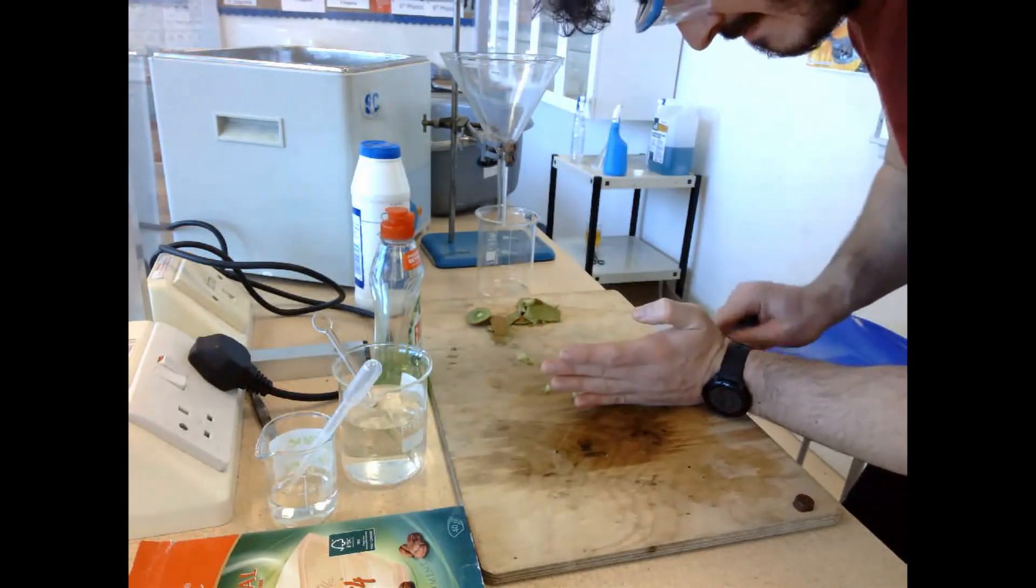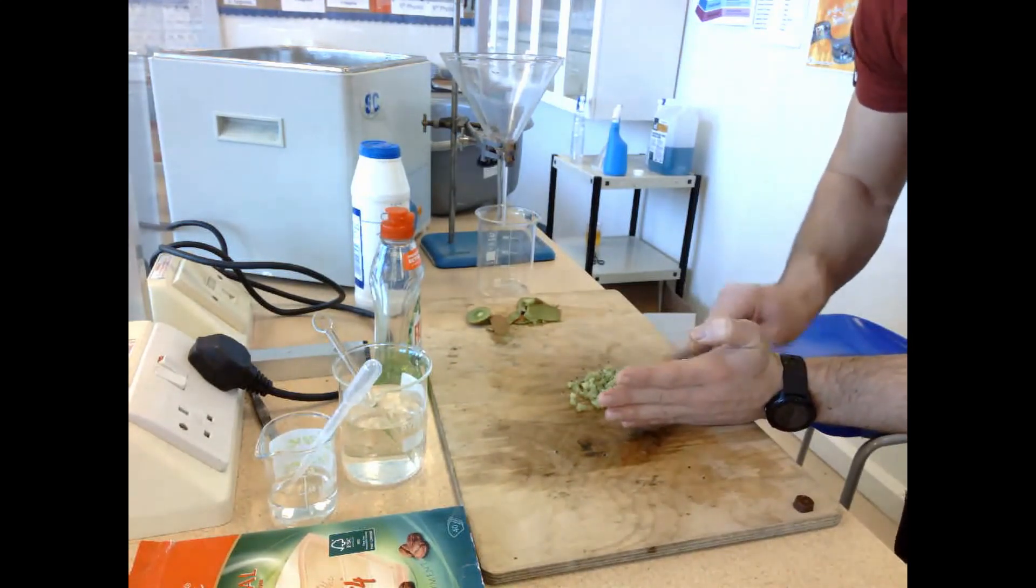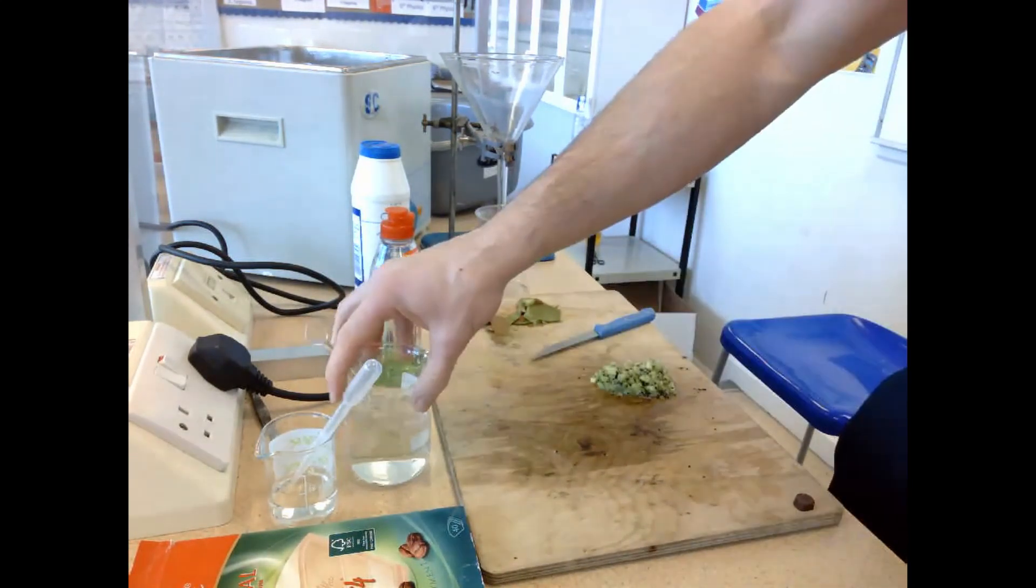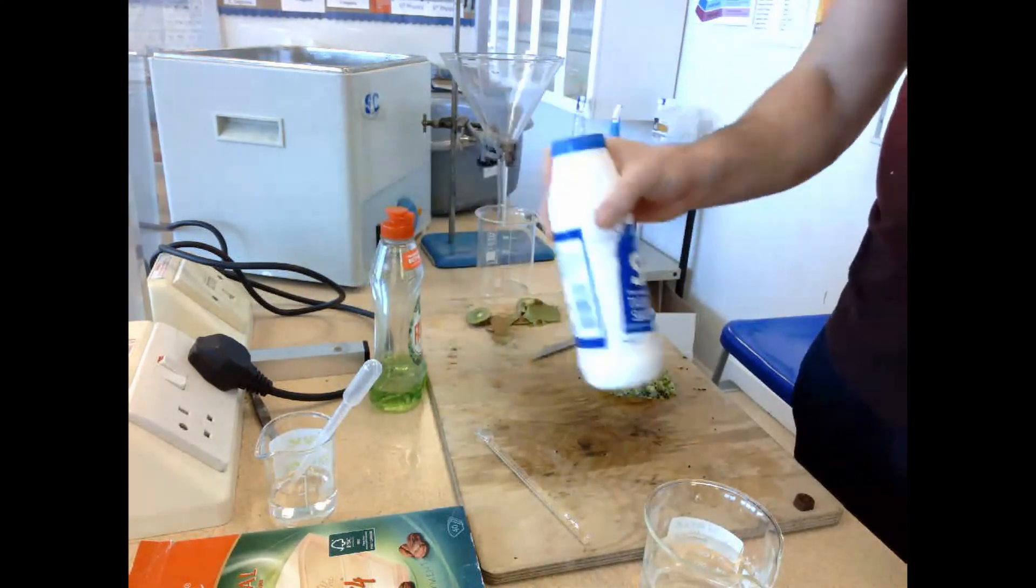Once it is chopped up into really small pieces, and we're pretty happy the cell contents will be released, we're now going to add salt into a water solution. The salt is there because it's going to cause the DNA to clump together.